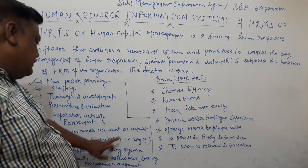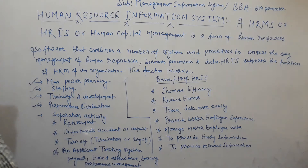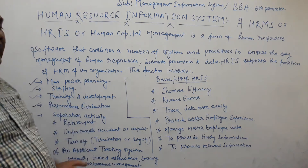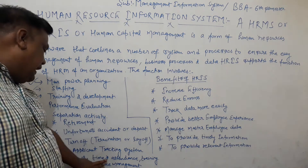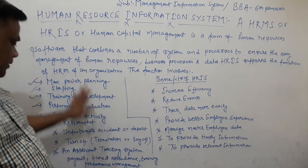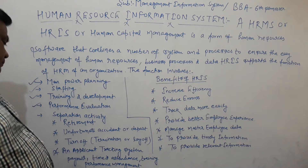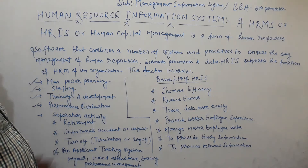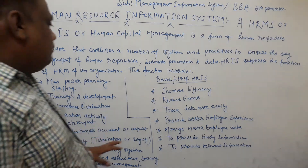Human resource management also covers termination, lay-offs, and applicant tracking. Key components include an applicant tracking system, payroll, time and attendance, training, and performance management. These are the main functions of the human resource information system.